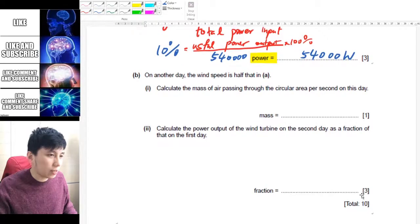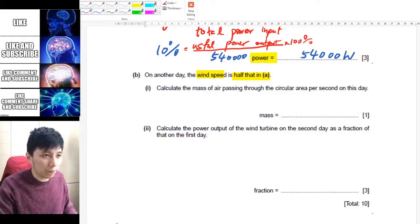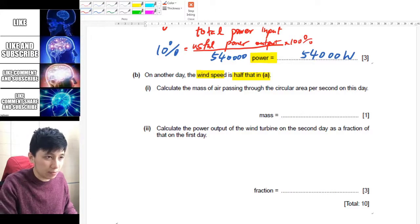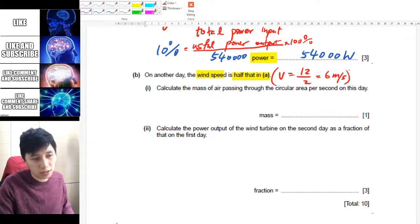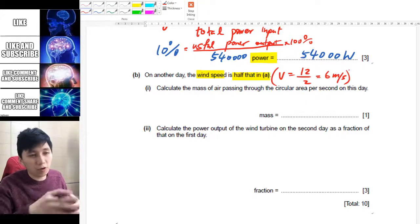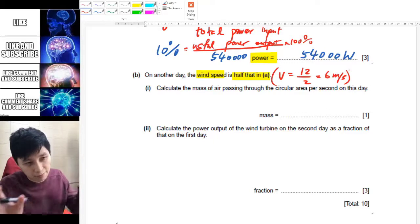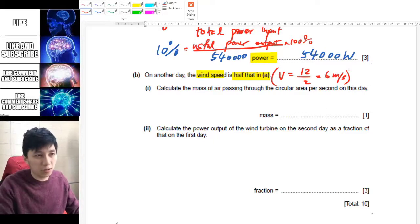The next part says that on the other day the wind speed is half of that in part (a), so v equals 12 divided by 2, which equals 6 meters per second. You can write this down — it's fine to include this step even if you're unsure whether it will be marked.